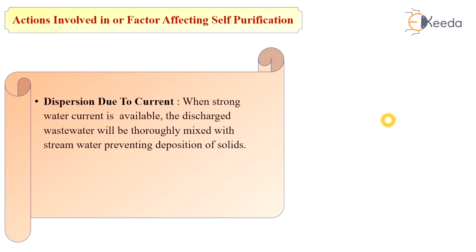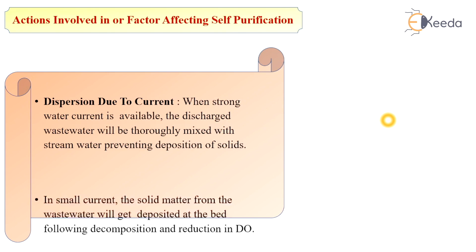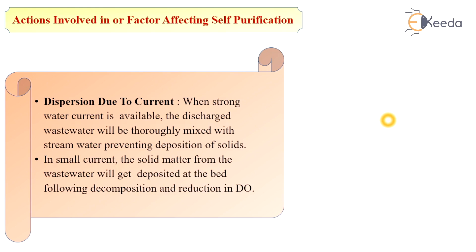The next factor is dispersion due to currents. When strong water currents are available, the discharged wastewater will be thoroughly mixed with stream water, preventing deposition of solids. When currents are present, the deposited solids will not settle at the bottom. In a small current, the solid matter from the wastewater will get deposited at the bed, causing decomposition and reduction in dissolved oxygen.